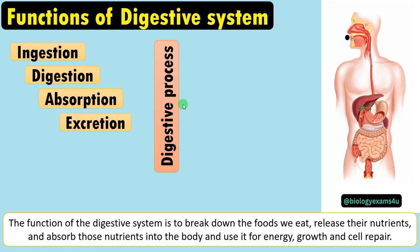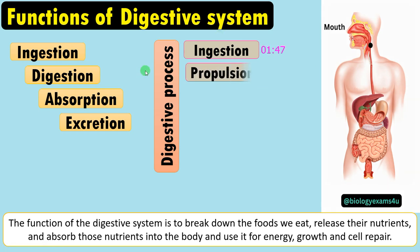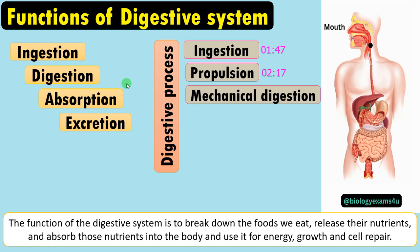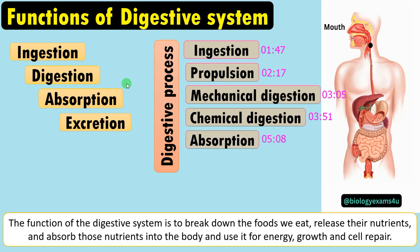Six activities happen during this digestive process. The first one is ingestion of food into the mouth, then propulsion — the movement of food along the alimentary canal by means of peristalsis — then mechanical digestion by means of chewing and churning, chemical digestion by means of digestive enzymes and gastric juices, absorption primarily in the small intestine, and finally the undigested matter is removed through the opening called the anus, a process called defecation.